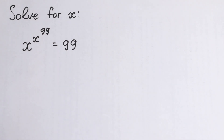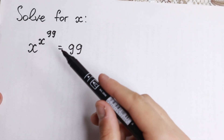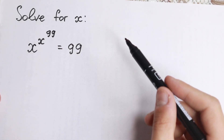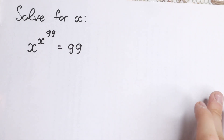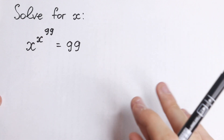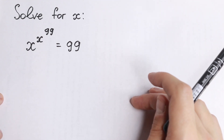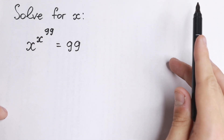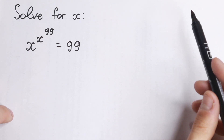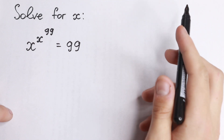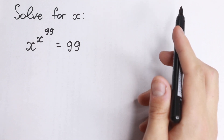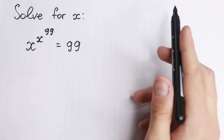Hello everyone, welcome back to MathMode. Really interesting exponential equation today. We have x to the power x to the power 99 equal to 99. This is not like a general method, but I want to show you a really good trick on how we can do this. I think you will understand.